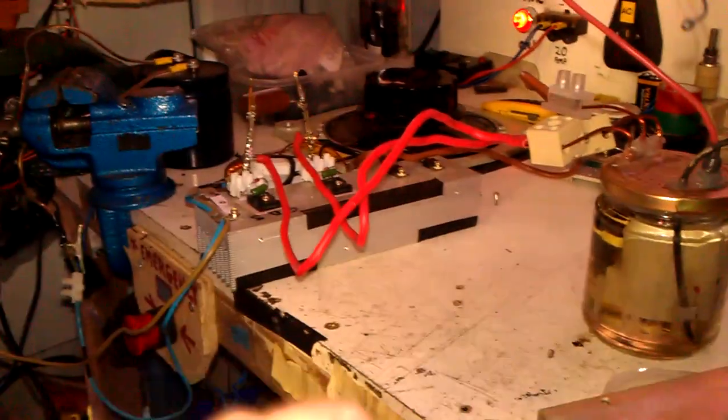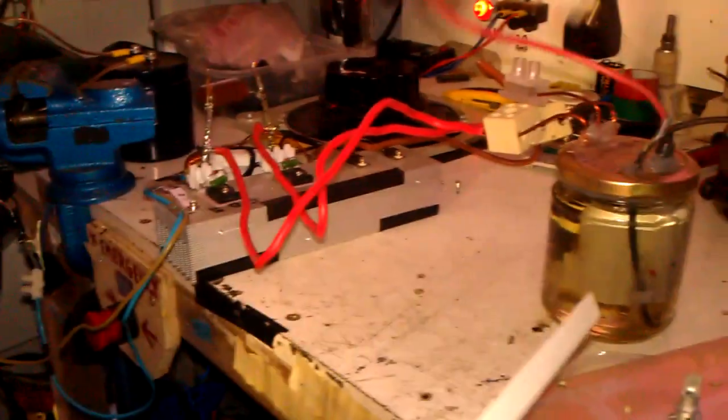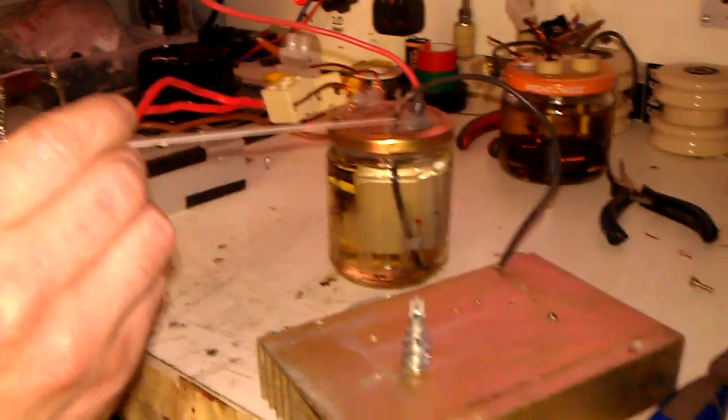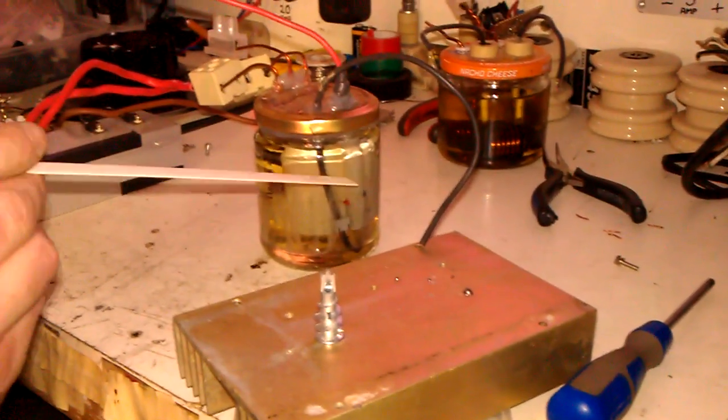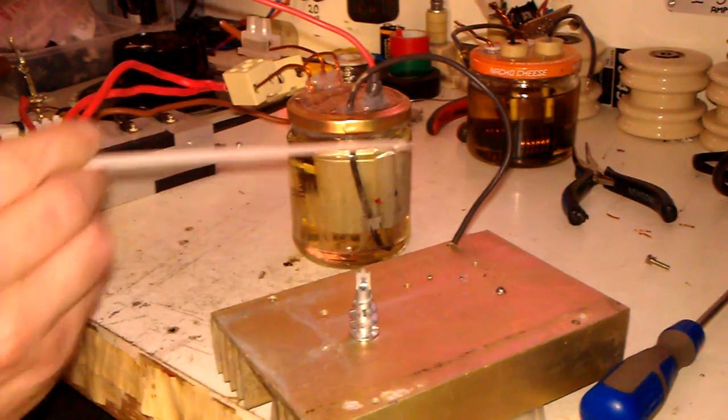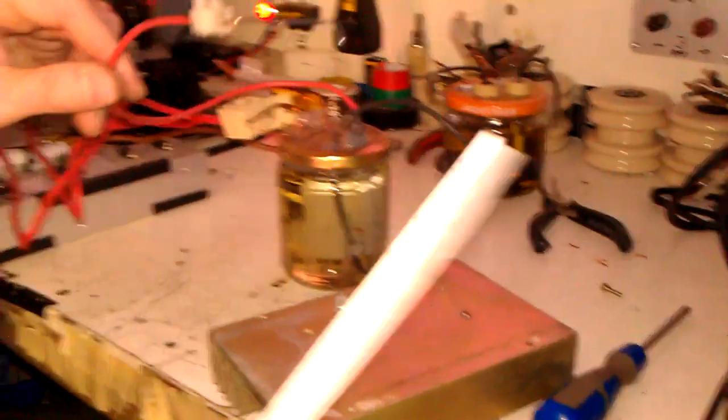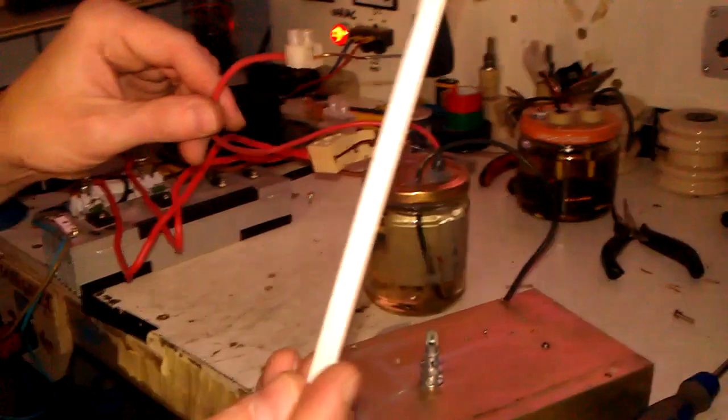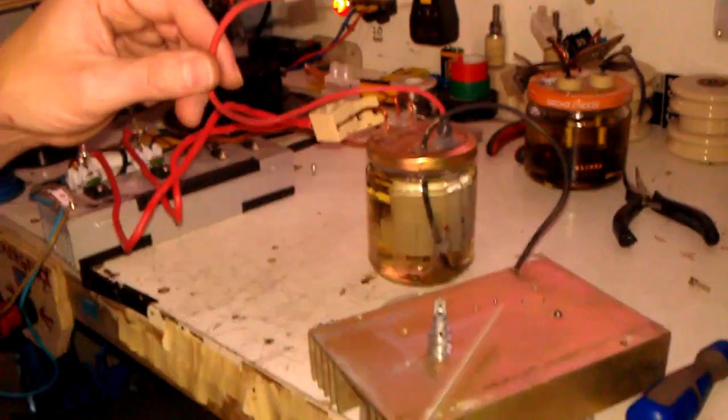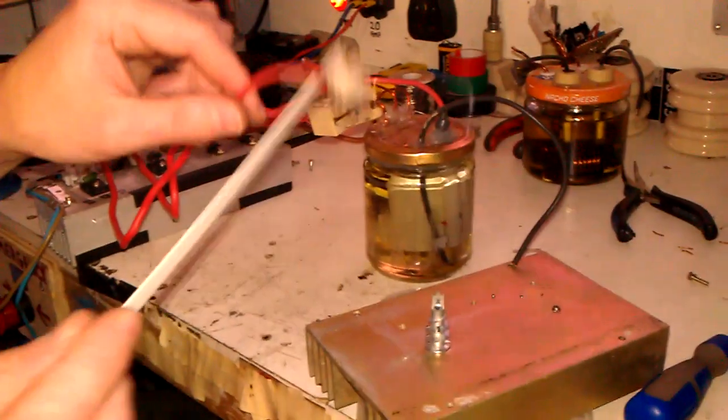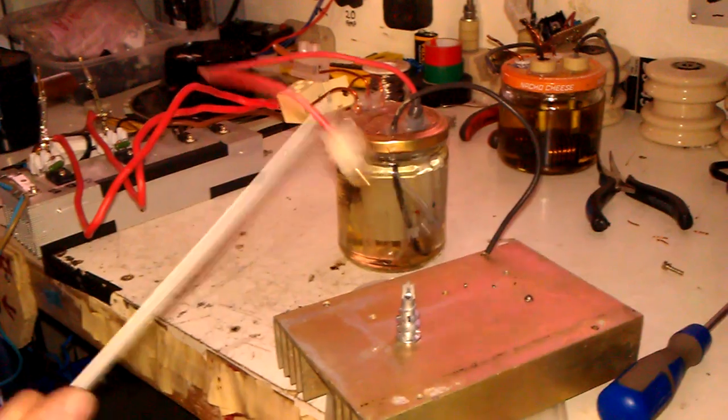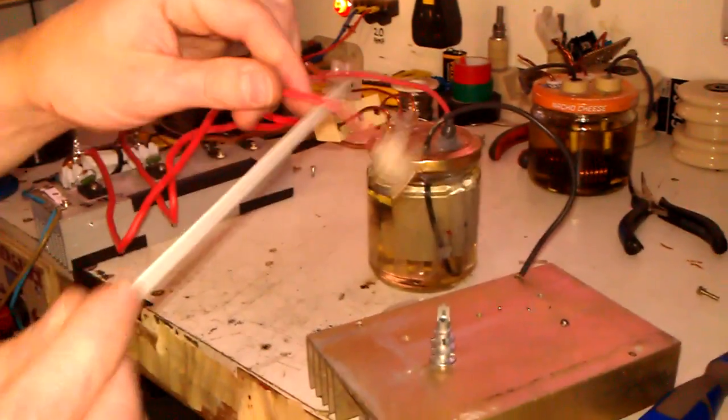So I'm just doing a classic ZVS setup with the flyback in oil there. One side of the output of the flyback is to the ground of this plate and the other one is just here. And this is a piece of porcelain stick. I'm using that as a chicken stick because I do not want to touch it.